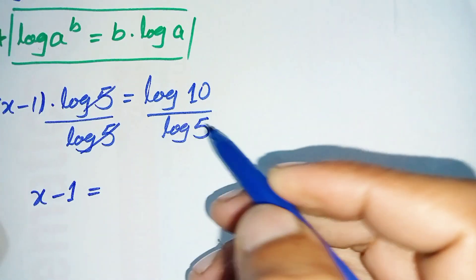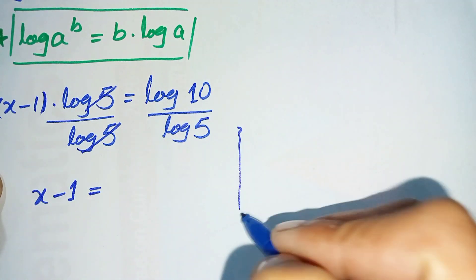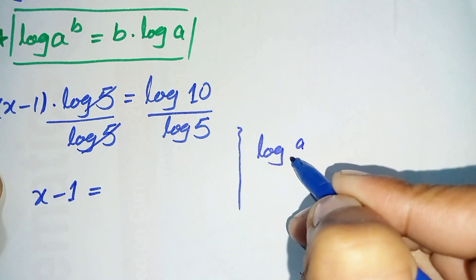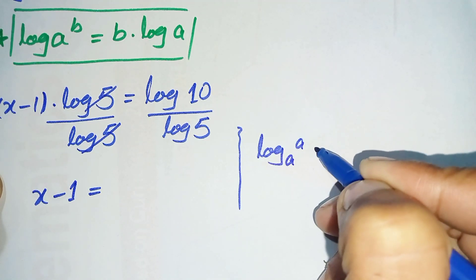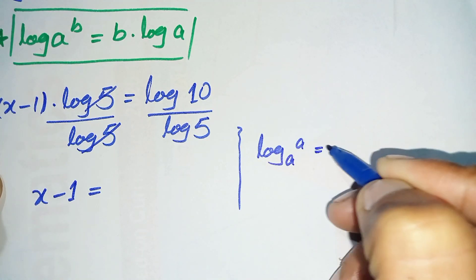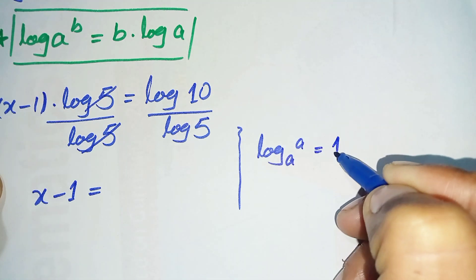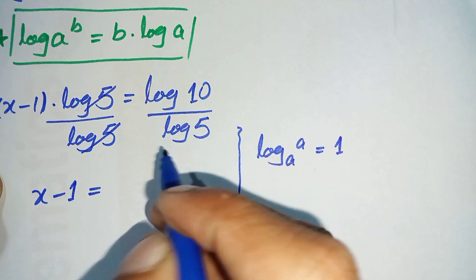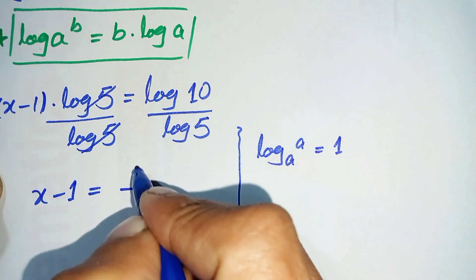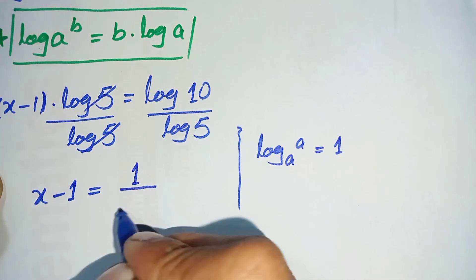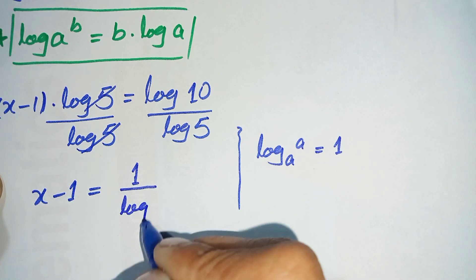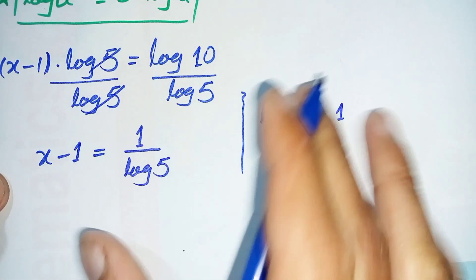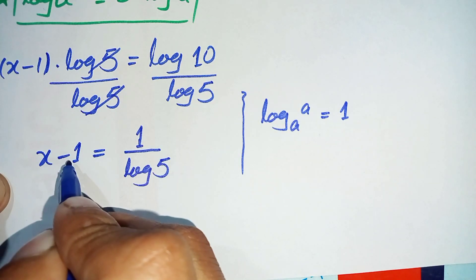On the right hand side we have log 10 divided by log 5. This is common log, and we know that log of any positive number with the same base is always equal to 1, so log of 10 base 10 equals 1. We replace it with 1 over log 5.